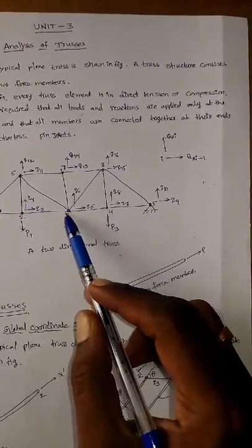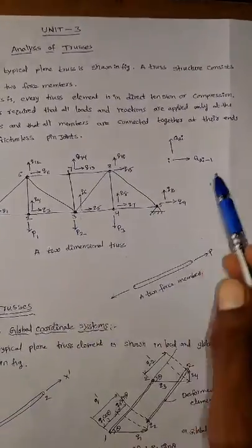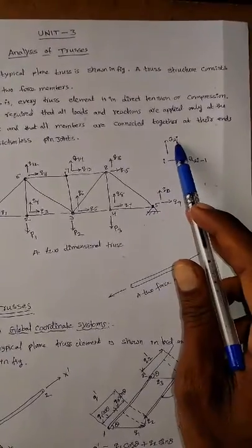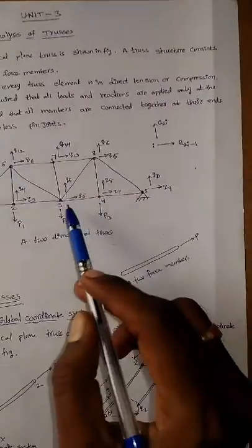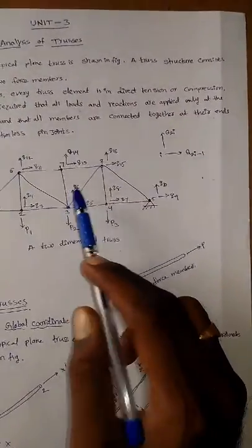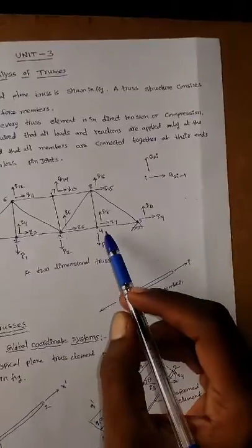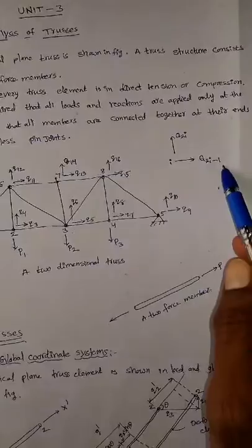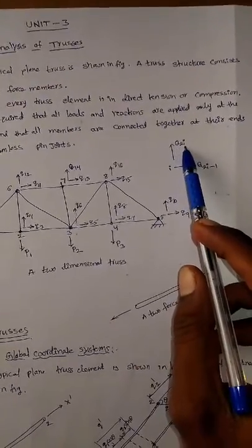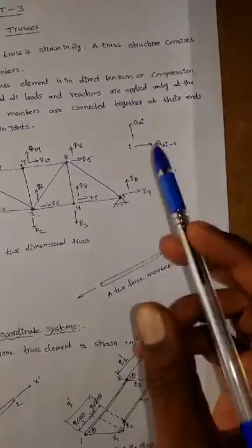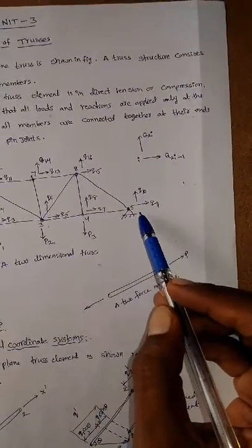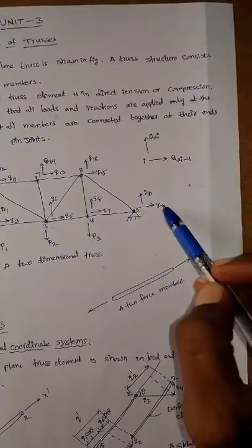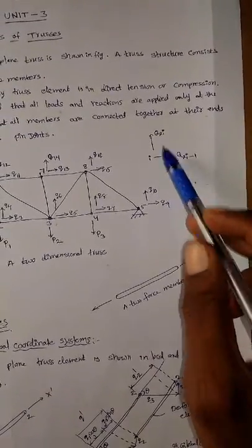For the third node, i=3: x-direction gives 2×3−1=5, so q5; y-direction gives 2×3=6, so q6. For the fourth node, i=4: x-direction gives q(2×4−1)=q7; y-direction gives 2×4=q8. For the fifth node, i=5: x-direction gives 2×5−1=9, so q9; y-direction gives 2×5=q10.